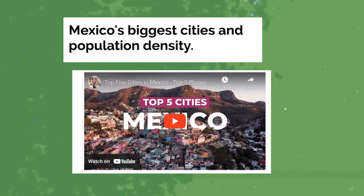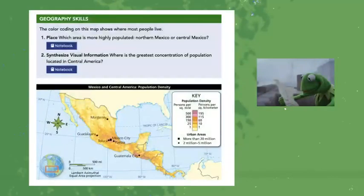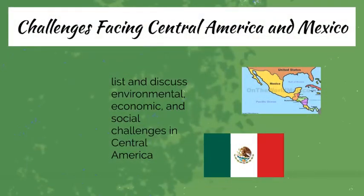Moving on to Mexico and Central America, we'll be looking at the biggest cities Mexico has and the dynamics and characteristics of them in terms of shaping population density. We'll be using population density maps — here's an example of a map we'll be looking at for northern and central Mexico — examining the reasons why more people are concentrated in certain areas or cities.